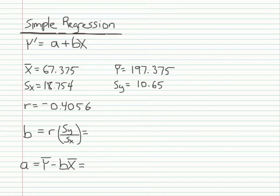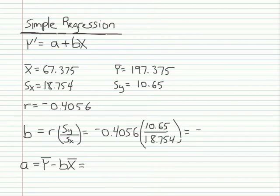To get the slope coefficient, you simply need the correlation negative 0.4056 and the ratio of the two standard deviations: 10.65 and 18.754. And with that we get a slope of negative 0.2303.